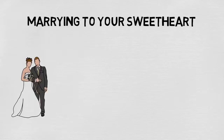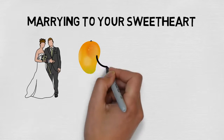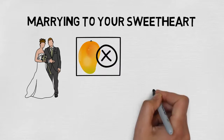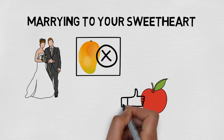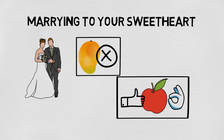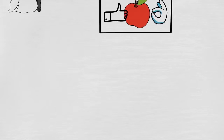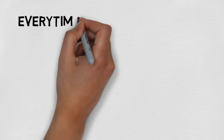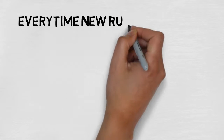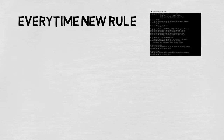Now you marry your sweetheart, who doesn't like mango — she likes apple. So all your knowledge of choosing mangoes is useless. You buy apples for your sweetheart and have to extract new rules to choose a sweet apple. In every different situation, you have to change the rules.